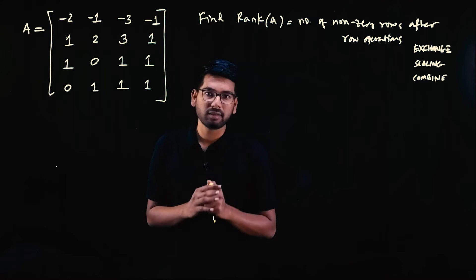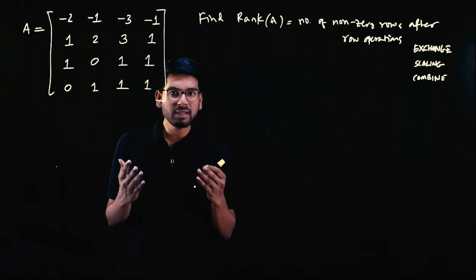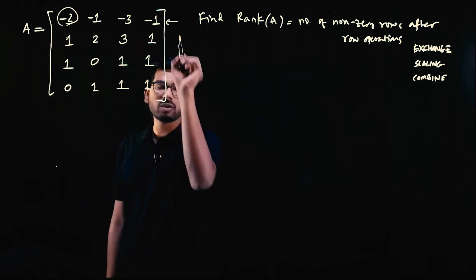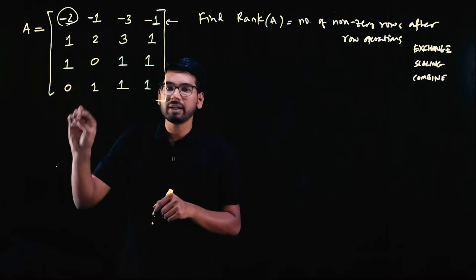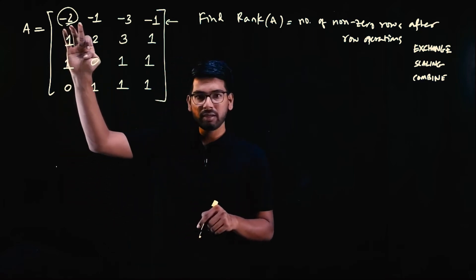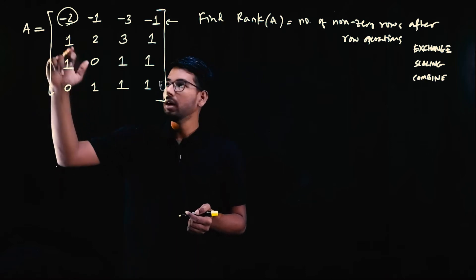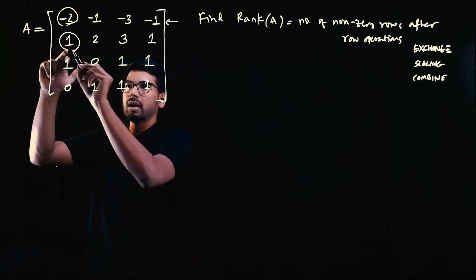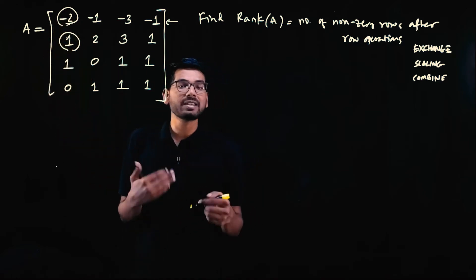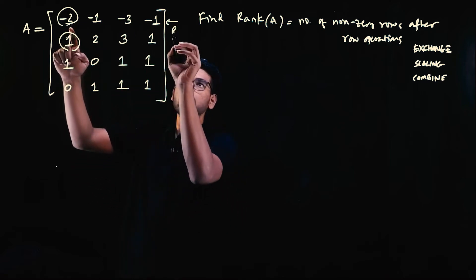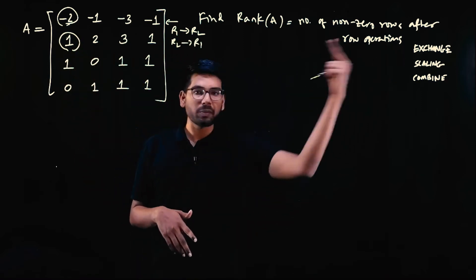The number of non-zero rows remaining is the rank. For a given matrix, the procedure is: first, the first element of the first row should be made 1. If the element is not 1, look for rows below where any element is 1, then perform a row exchange operation — swap row 1 with row 2.